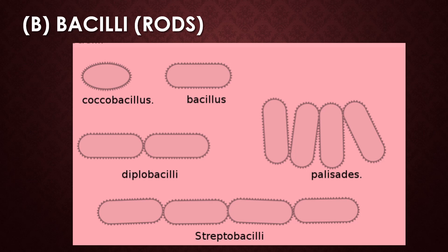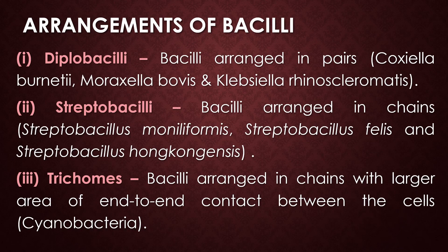The next bacterial shape is rod-shaped bacteria, widely referred to as bacillus. Regarding arrangement, they are available in various arrangements like coccobacillus, diplobacilli, palisade or Chinese letter appearance, and streptobacilli. Nearly five types of arrangements are available for bacilli.